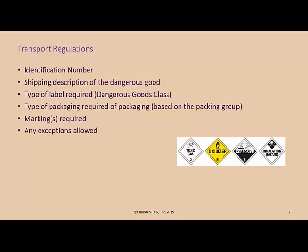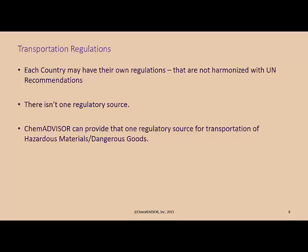One has to manually look up the information required prior to transporting to determine what the classification should be, and what the identification number and description, hazard class, and packing group should be, which all have to appear on the shipping paper. They'll need to find out the types of label required, the type of packaging, and any additional marking required, and there may be exceptions to the regulations that they can utilize. There is not one source that provides all the dangerous goods and hazardous materials transport requirements. This is where ChemAdvisor can help, providing the one regulatory source for transportation of hazardous materials and dangerous goods.